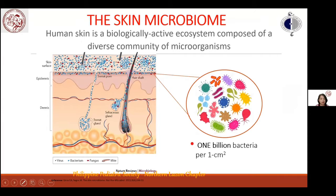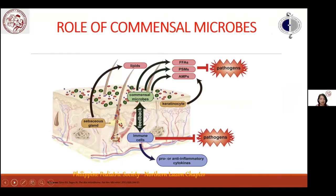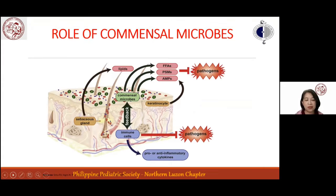Viruses, bacteria, and fungi, represented by colored dots, cover the human skin and its appendages. Commensal microbes inhibit pathogen growth by competition and crowding on the skin surface. Skin structures also inhibit pathogen colonization through production of antimicrobial peptides from keratinocytes and free fatty acids from sebocytes. The microbiota interacts with immune cells to modulate production of pro- and anti-inflammatory cytokines.